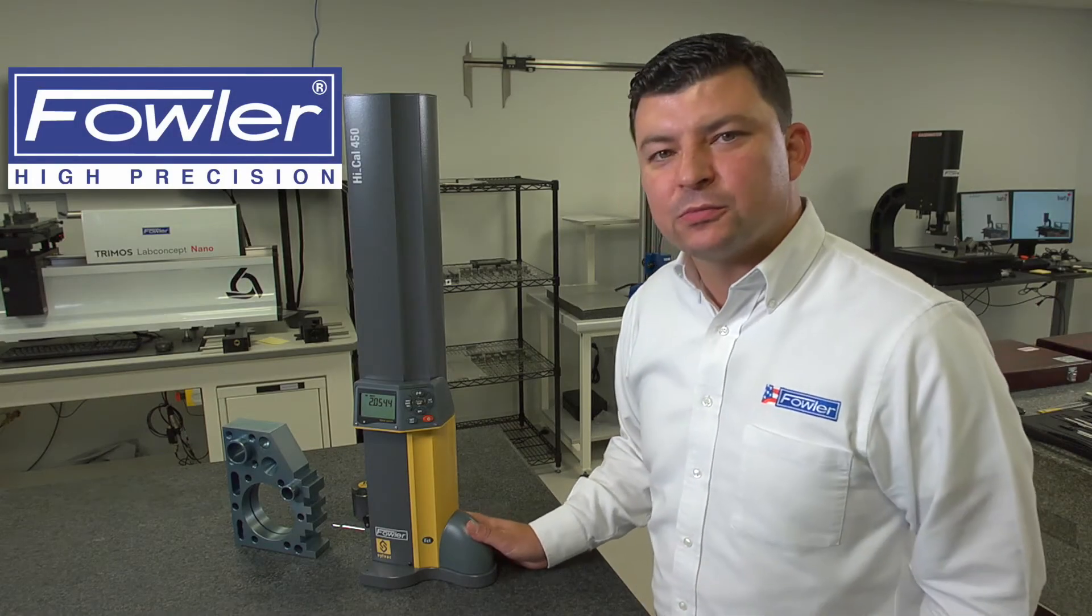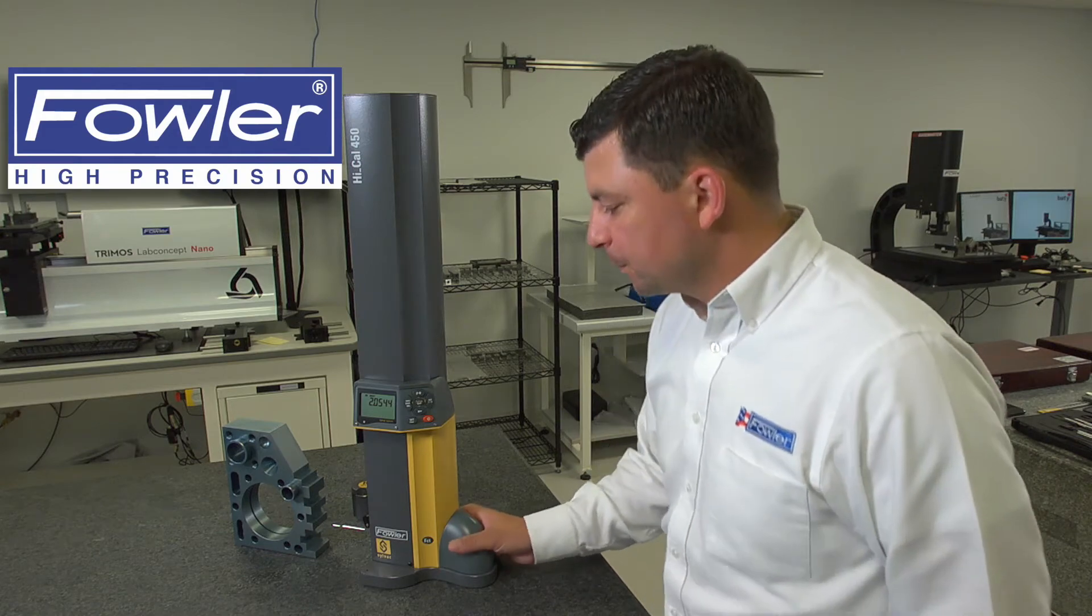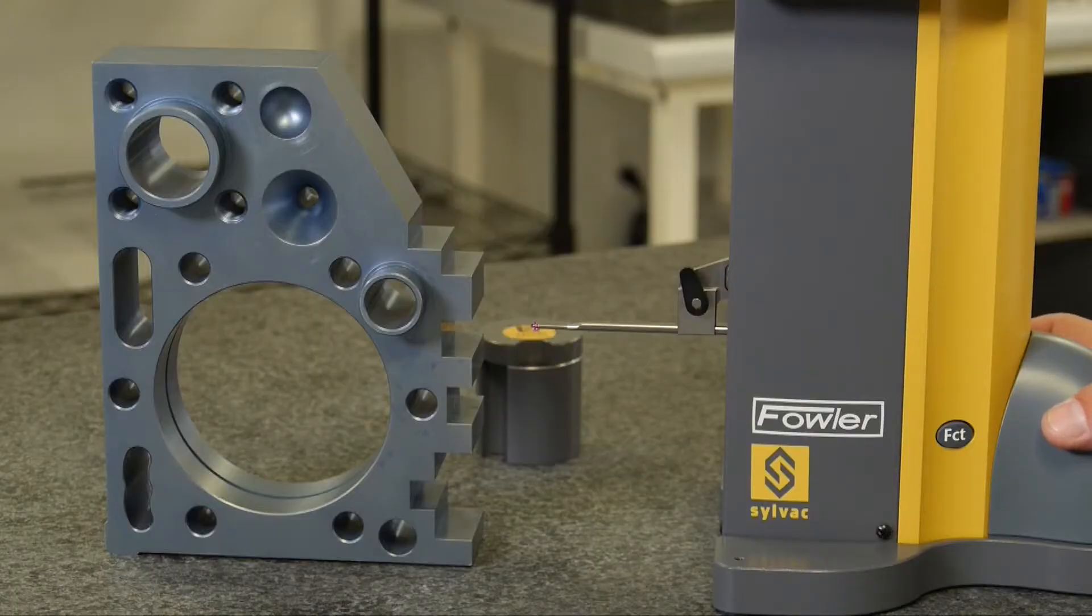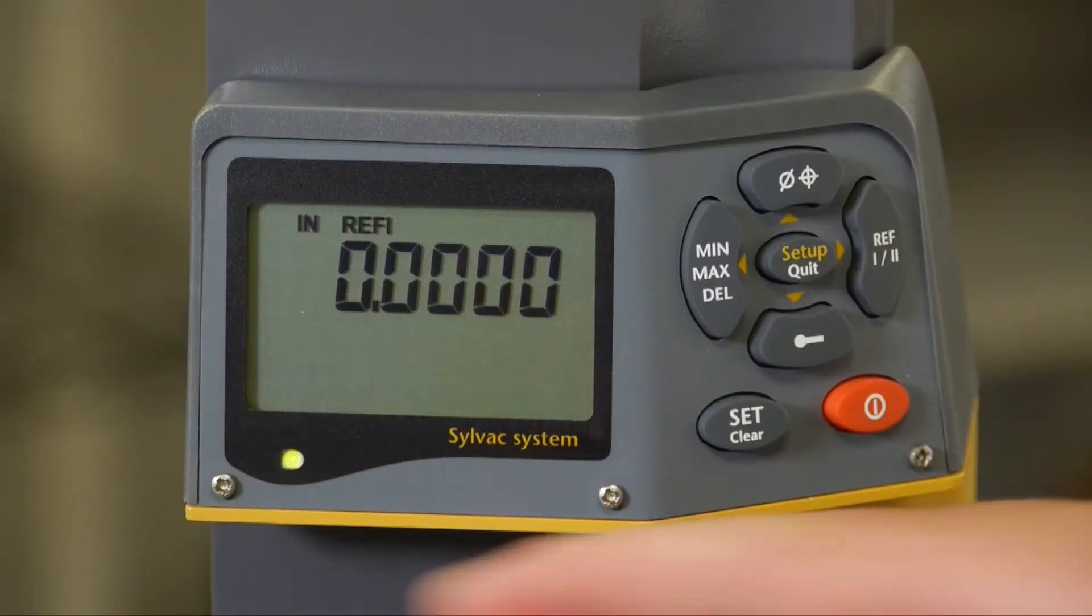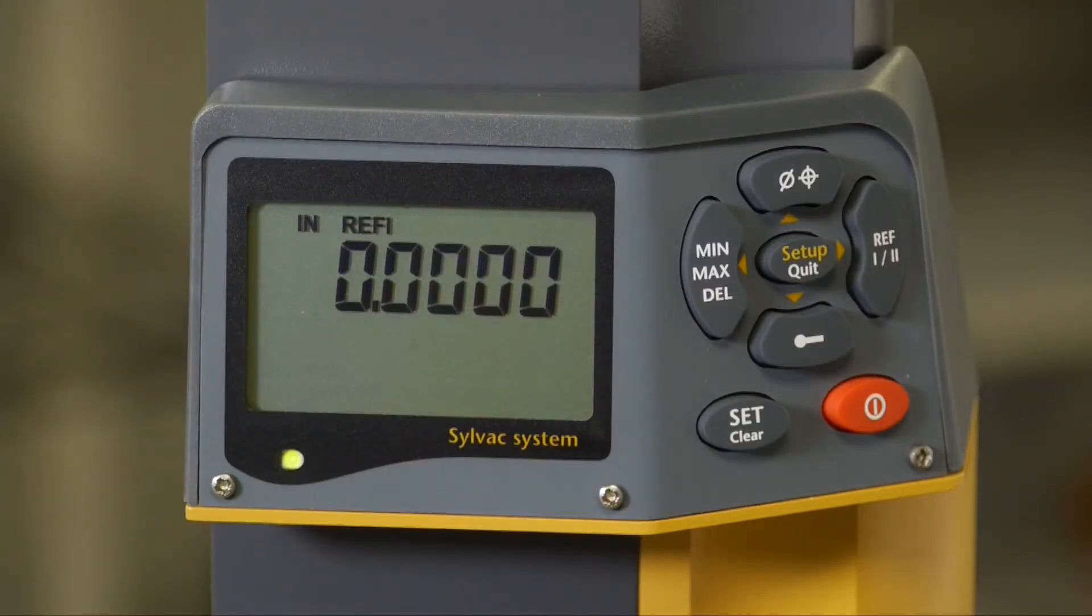Today we're going to look at some basic height measurements with the HI-CAL. First, we can drive the probe into a plate and establish a zero, creating an origin or a reference position.